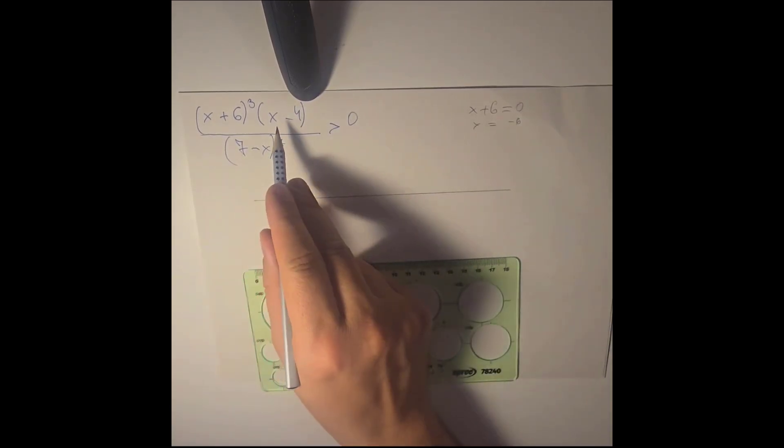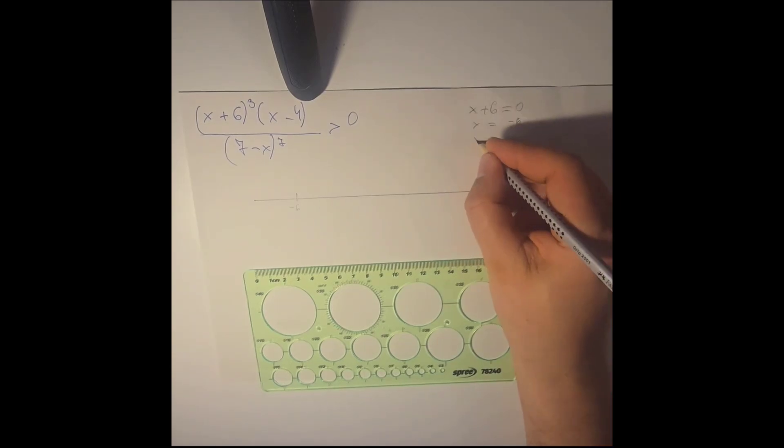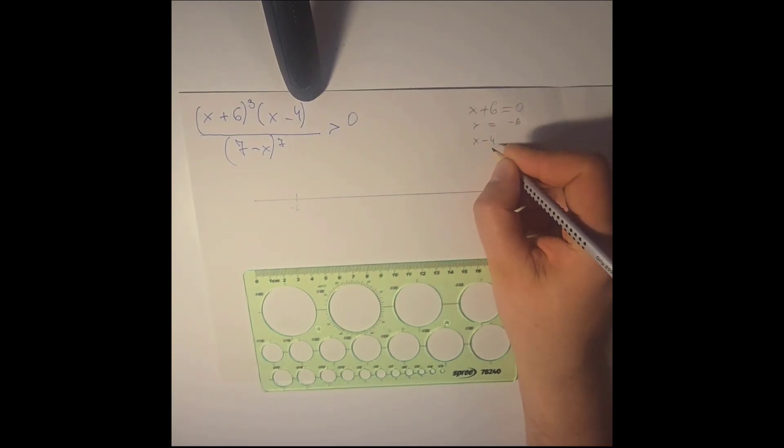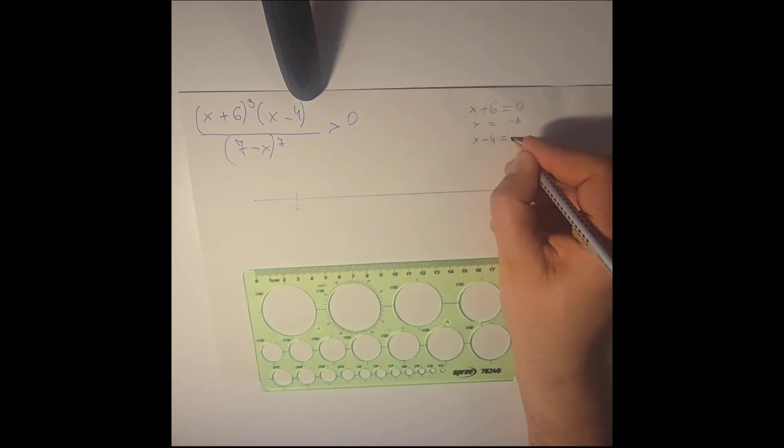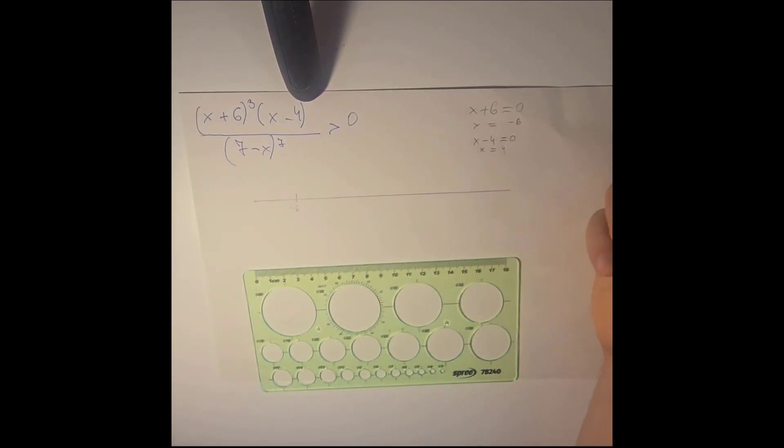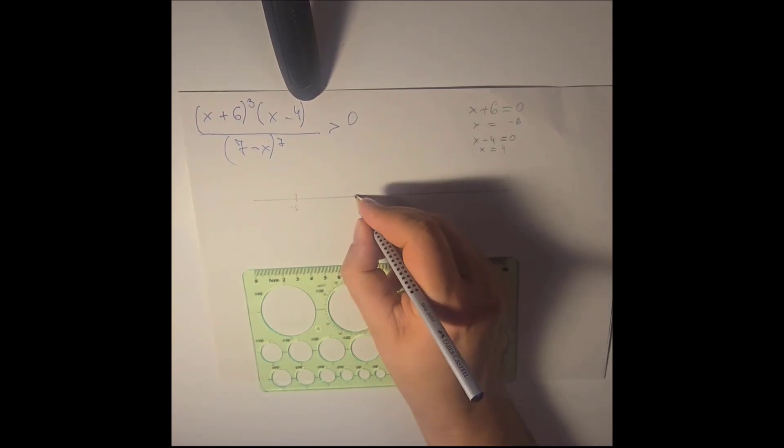The same with x minus 4. It is equal to 0 when x is equal to 4. So we need to write 4 somewhere as well, like this.